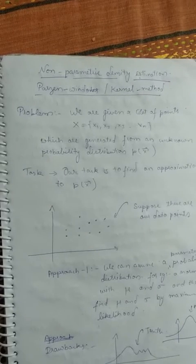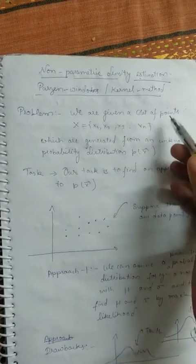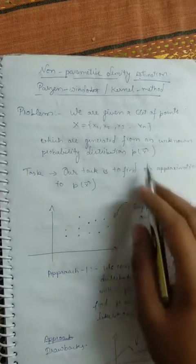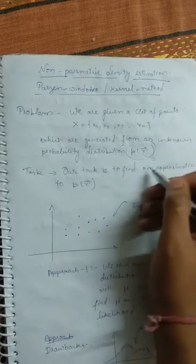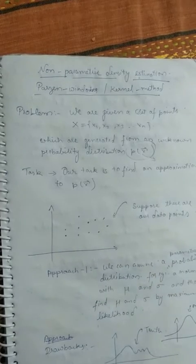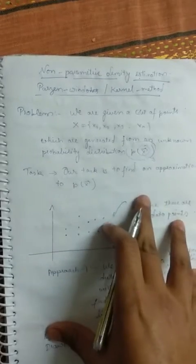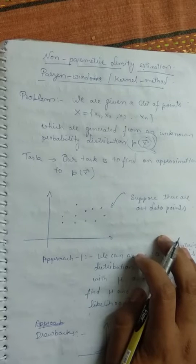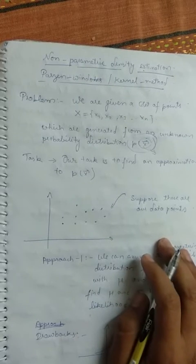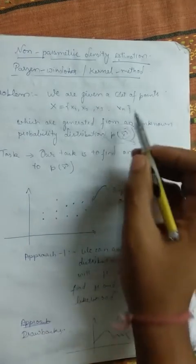In density estimation, we are given a set of points in the form of a dataset x1, x2, x3, x4, and xn. These points are generated from an unknown probability distribution p(x). This x may be a scalar, a vector, or a multidimensional tensor. We will consider the simple case of a scalar, but the approach generalizes well with very minor modifications. Our task is to find an approximation to p(x), the original probability distribution from which this data is generated.